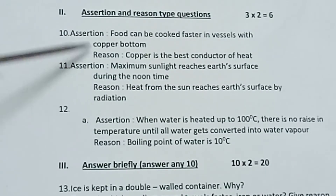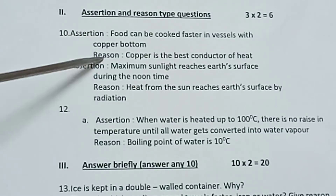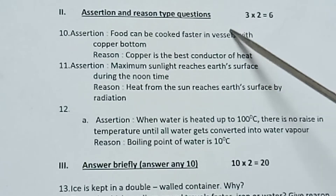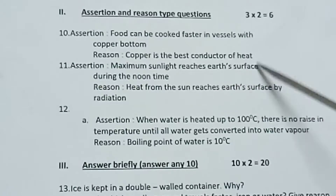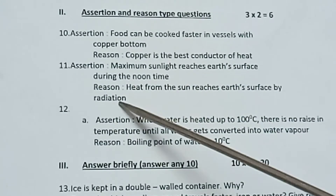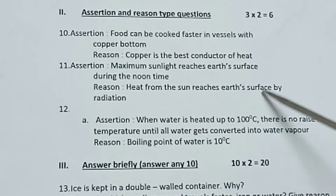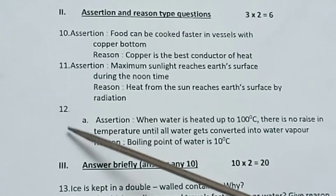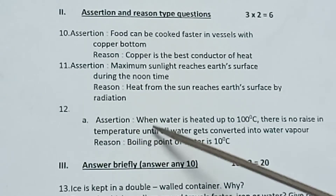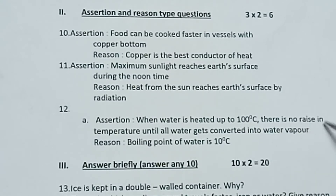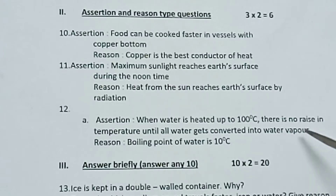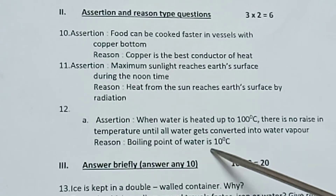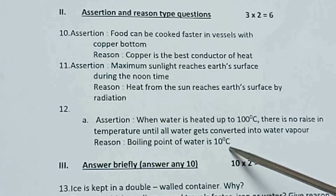Options: both assertion and reason are correct, reason is wrong, otherwise both are correct. Eleventh one — Assertion: Maximum sunlight reaches earth's surface during noon time. Reason: Heat from the sun reaches earth's surface by radiation. Twelfth one — Assertion: When water is heated up to 100 degrees Celsius, there is no rise in temperature until all water gets converted into water vapor. Reason: The boiling point of water is 100 degrees Celsius.